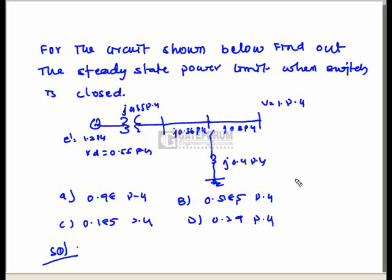For the circuit shown below, find the steady state power limit when the switch is closed. A single line diagram is given with all reactances. The generation voltage is 1.2 per unit and the infinite bus voltage is 1 per unit. When the switch is closed, there is a connection. The first step is to draw an equivalent circuit, known as an impedance diagram.